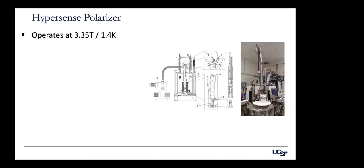That's a quick overview of DNP physics. I'm going to move over to the hardware side in the remaining 20 to 25 minutes. Are there any remaining questions about DNP physics — why we polarize, how we do it, pros and cons?